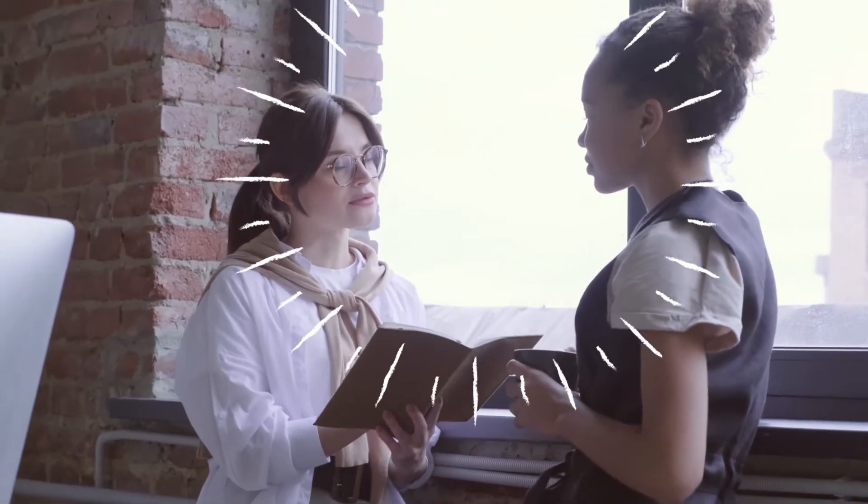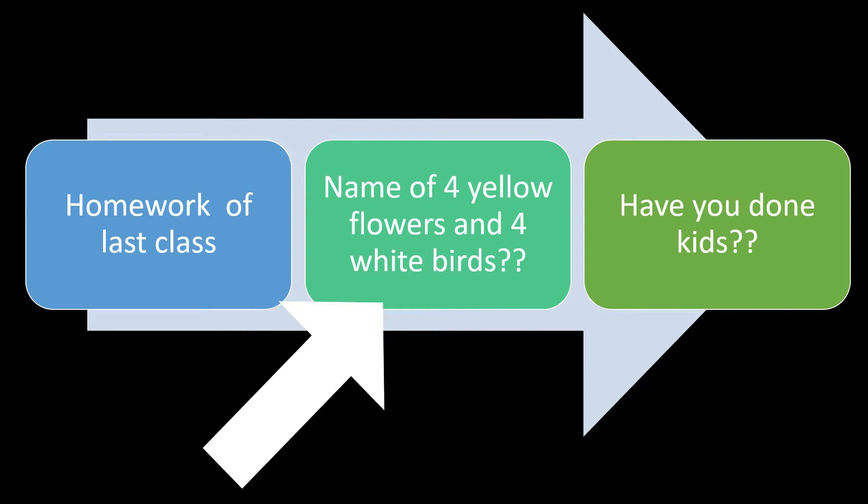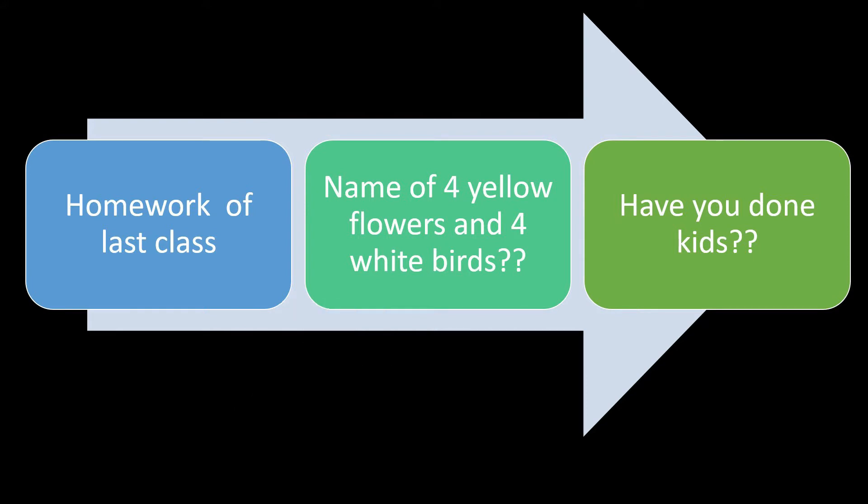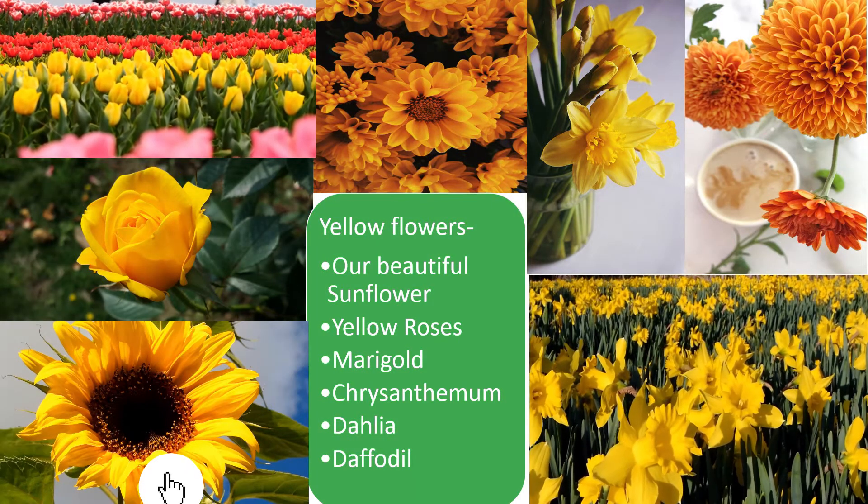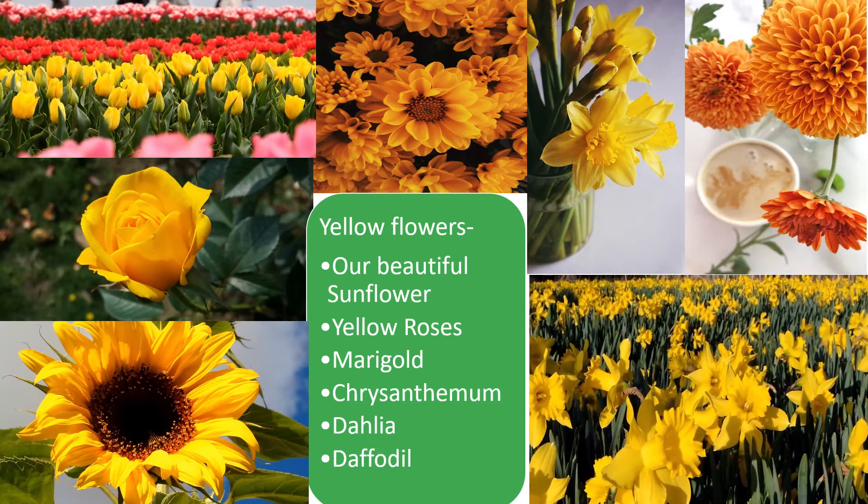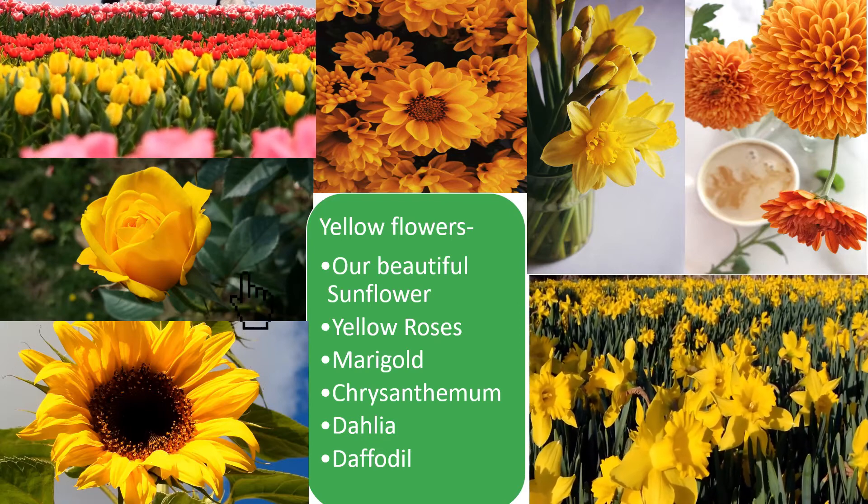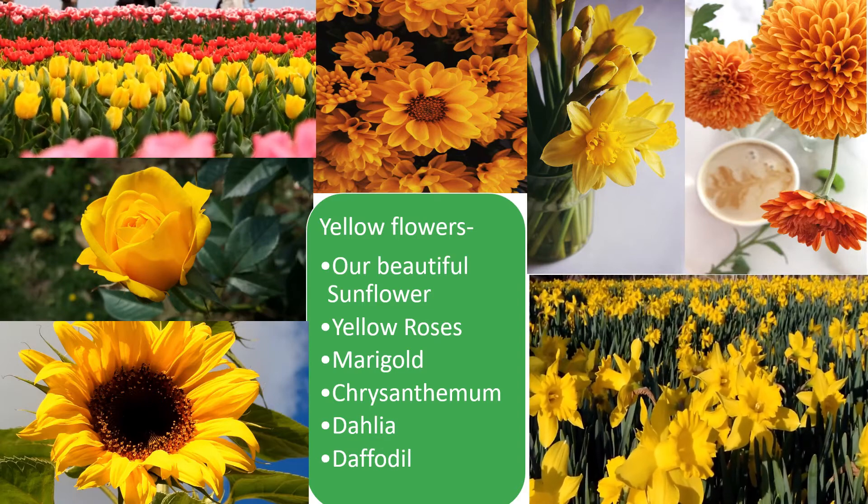But before that let's discuss the homework given in the last class. I told you to learn names of four yellow flowers and four white birds. The different yellow flowers you can find in your surroundings are sunflower, yellow roses, marigold, chrysanthemum, dahlia, and daffodils.